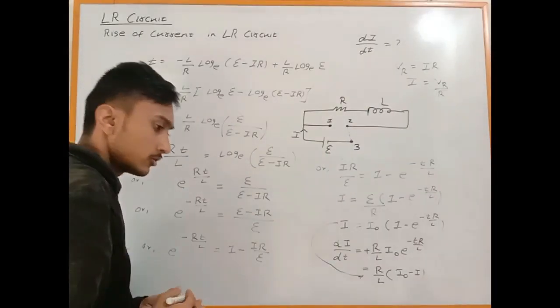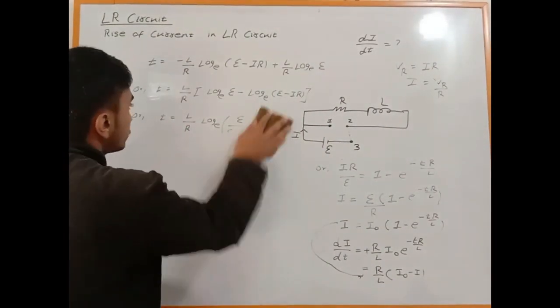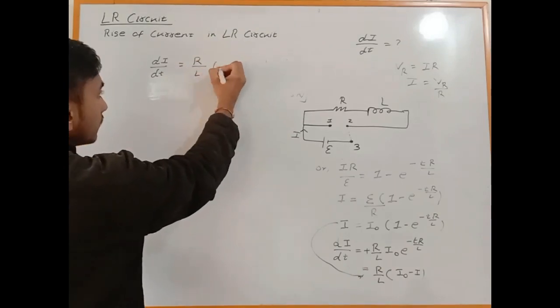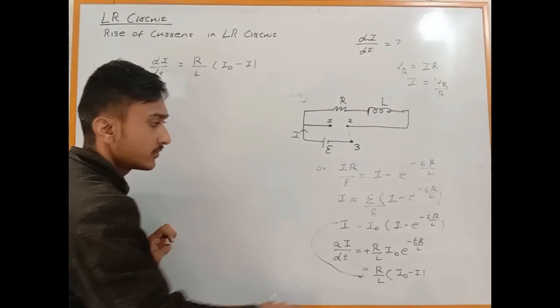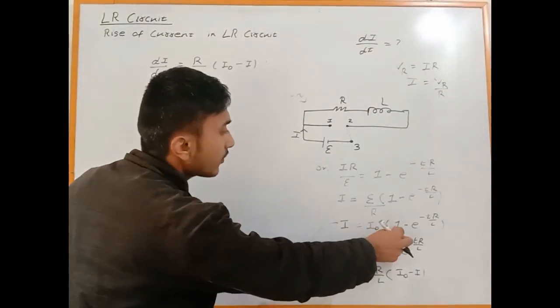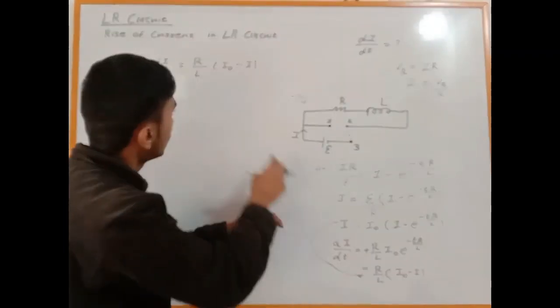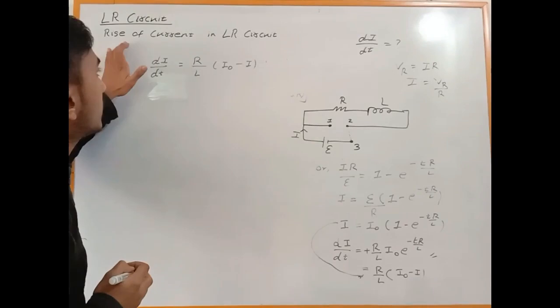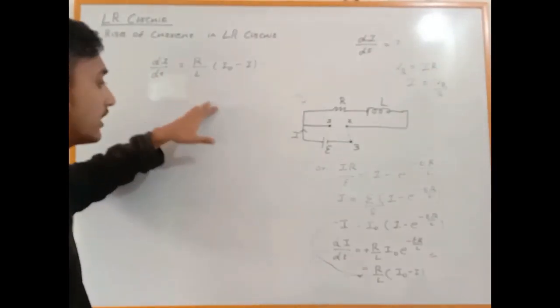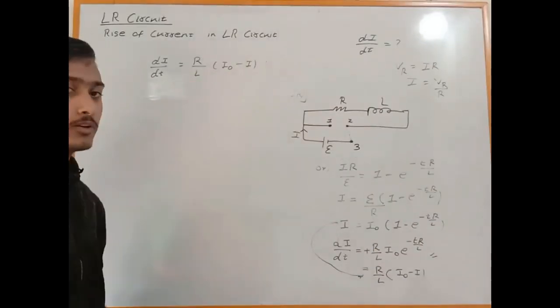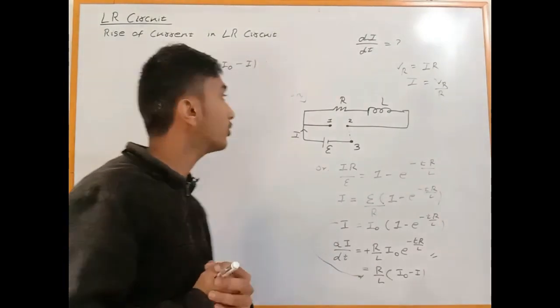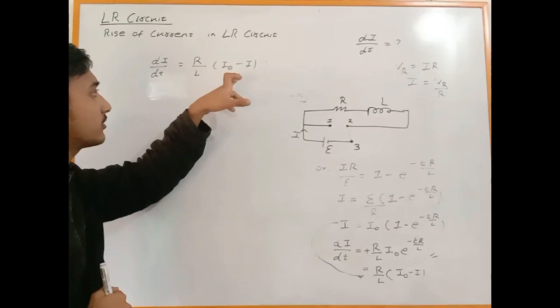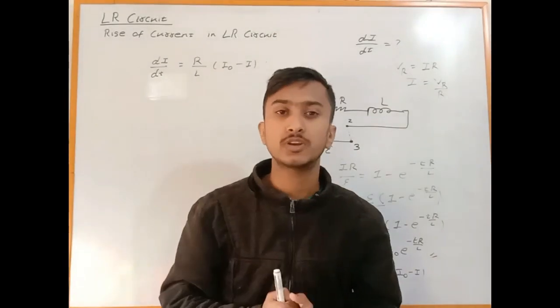We can also write dI/dt as (R/L) times (I_not minus I). These are the final expressions. The current in an LR circuit rises exponentially according to I equals I_not times (1 minus e to the power minus TR/L), and dI/dt equals (R/L) times (I_not minus I). Thank you for watching this video, I hope you understand. Thank you very much, keep learning.